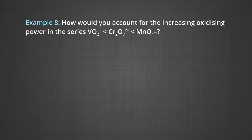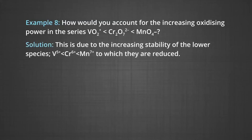Example: How would you account for the increasing oxidizing power in the series VO2+, Cr2O72−, and MnO4−? This is due to the increasing stability of the lower species — V in +5 state, Cr in +6 state, and Mn in +7 state — to which they are reduced.